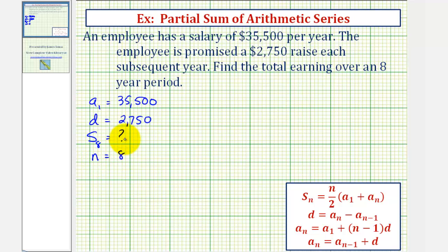If we look at our formulas again, notice how the partial sum formula requires us to have n, which we have, a sub one, which we have, but we don't have a sub n, which in this case would be a sub eight.